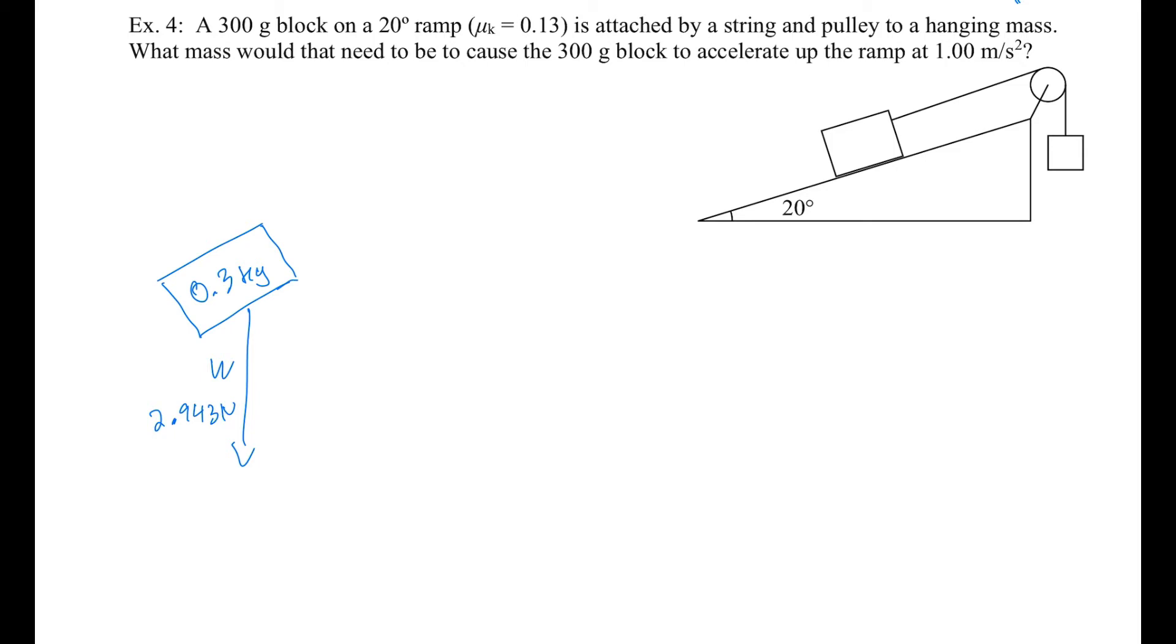I know that it's going to accelerate up the ramp at one meter per second squared. So I'm going to draw a equals 1.0 meter per second squared. I can see a string pulling it. So there's T here. I know that friction is going to make it harder to go up. Friction is going to resist the motion. Friction is the other way.